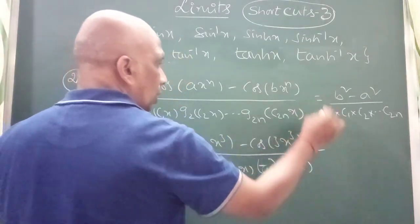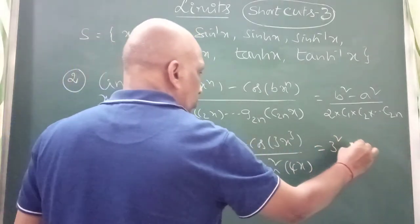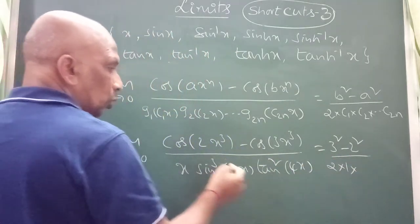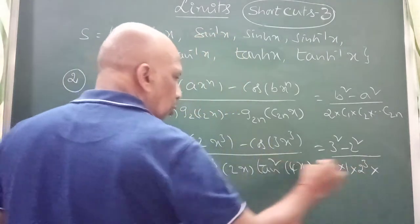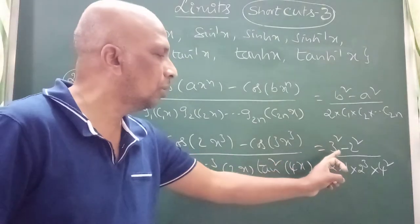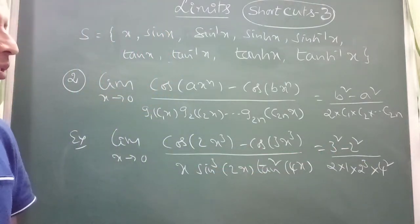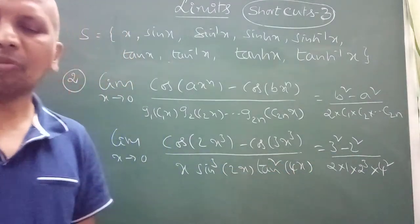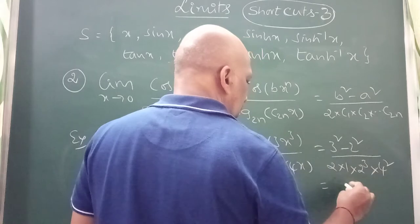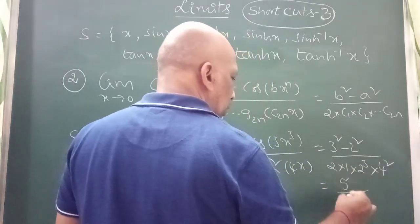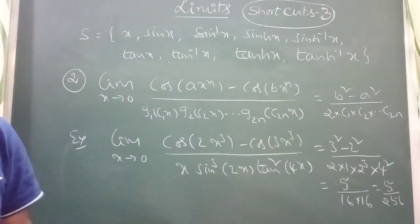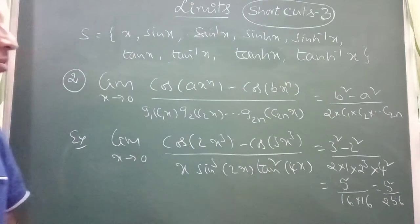The answer is 3 squared minus 2 squared, which is 9 minus 4, by 2 times the coefficients: x coefficient is 1, sin(2x) appears 3 times giving 2 cubed, and tan(4x) giving 4 squared. Simplifying: 9 minus 4 is 5, divided by 2 times 8 times 16 gives 5 by 256. That is the required answer.